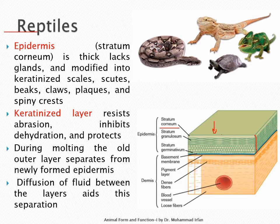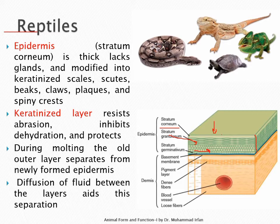Below the stratum corneum is the stratum granulosum, in which the keratinocytes are not yet fully cornified but are progressing toward cornification and have begun depositing keratin. Beneath that is the stratum germinativum — as the name suggests, this is a highly regenerative layer that produces new cells. Beneath this three-layered epithelium is a basement membrane, as found in nearly all epithelial tissues.